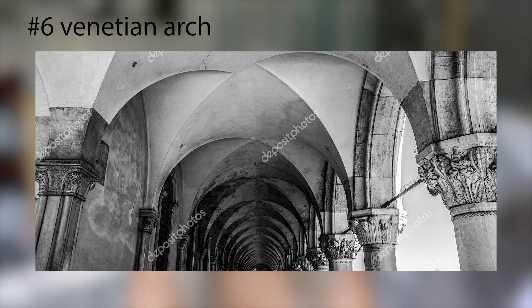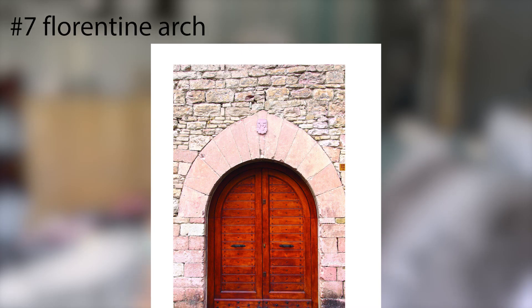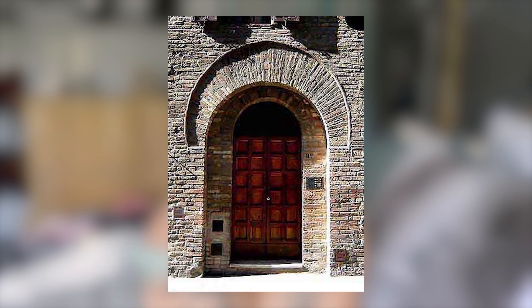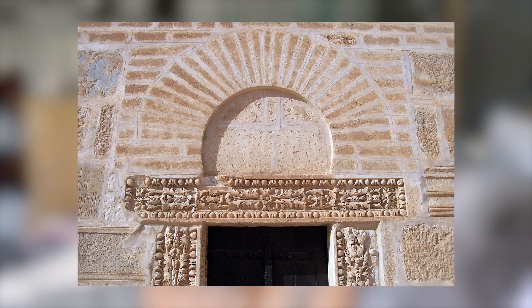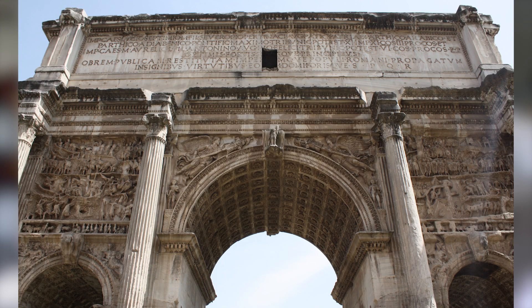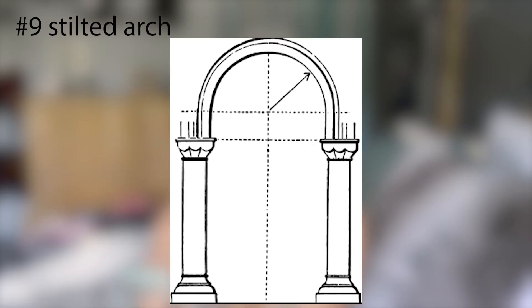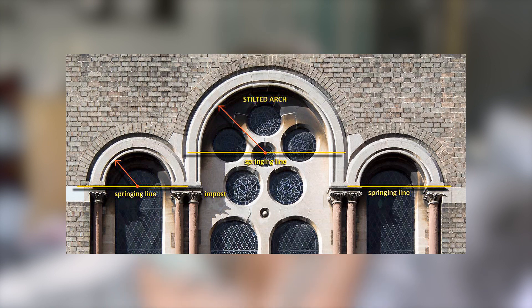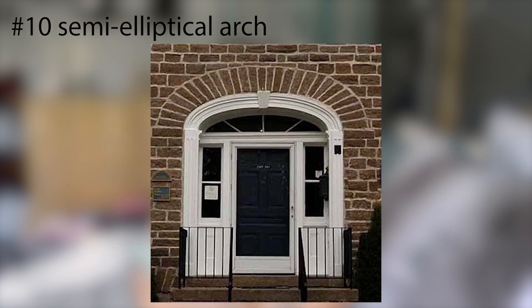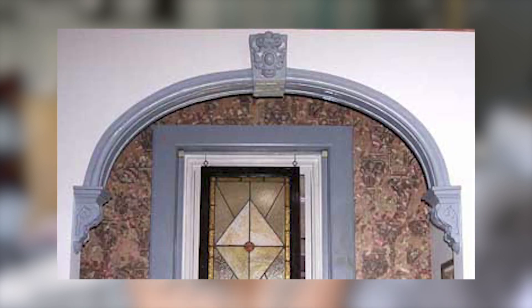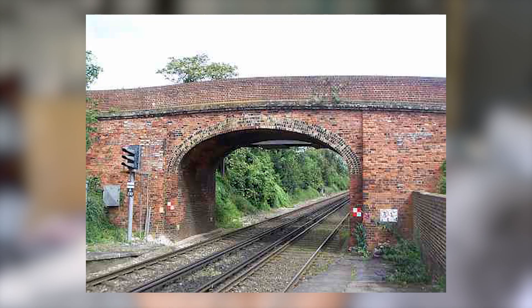Six: Vietan arch — similar to a pointed arch but with a deeper springing line. Seven: Florentine arch — in the shape of a semicircle, but the rest of the arch is similar to a Vietan arch. Eight: relieving arch — constructed above a flat arch or wooden lintel to provide greater strength. Nine: stilted arch — consists of a semicircular arch with two vertical portions at the springing line. Ten: semi-elliptical arch — has a semi-ellipse shape and also has three or five ellipse centers.